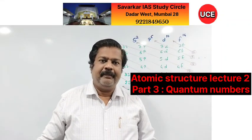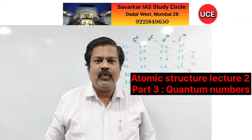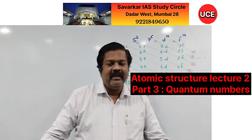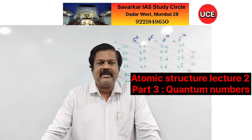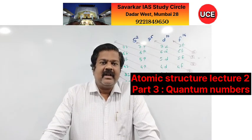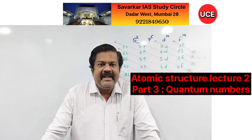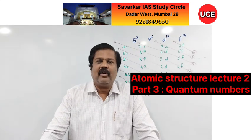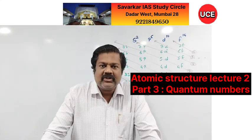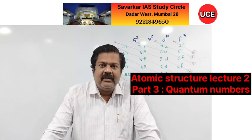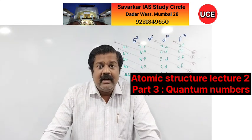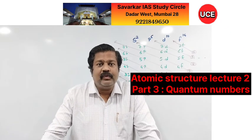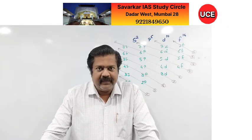When we have to apply Hund's rule of maximum multiplicity, keep in mind that P, D, or F orbital should be the last orbital, and the second implied condition is that it should not be fully filled.